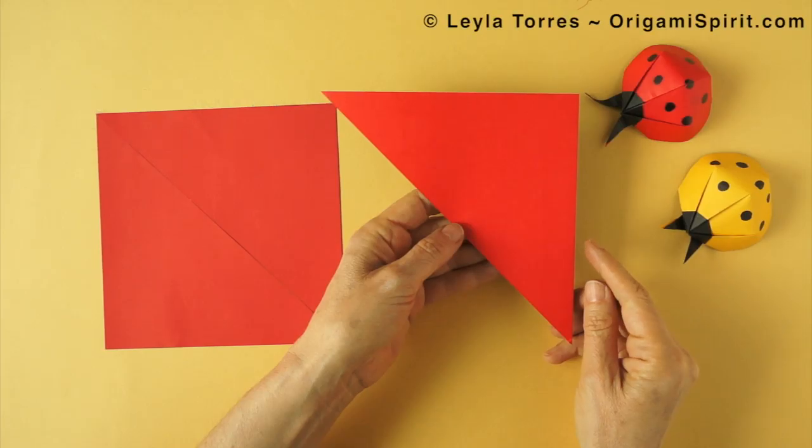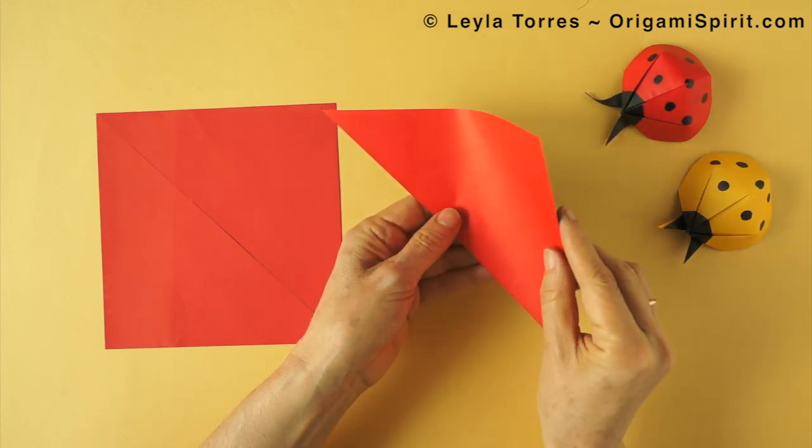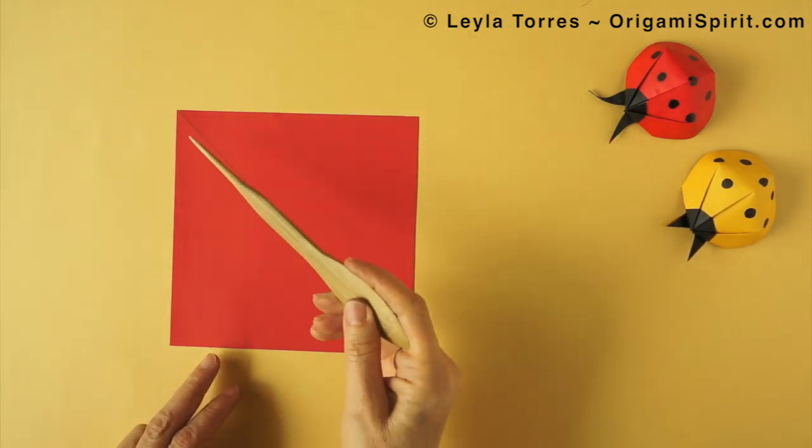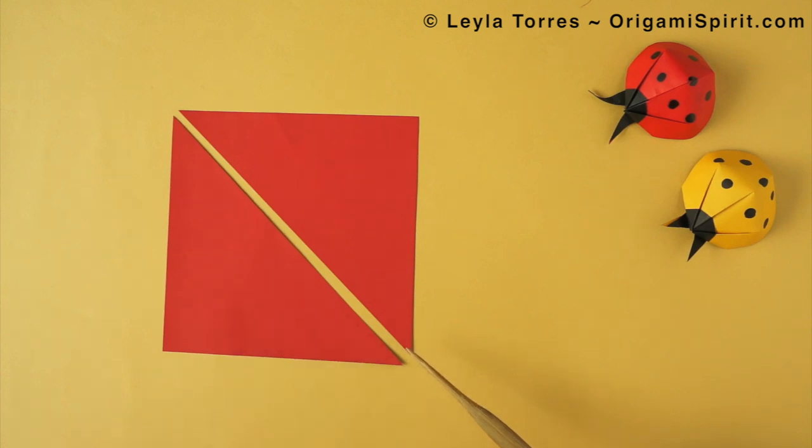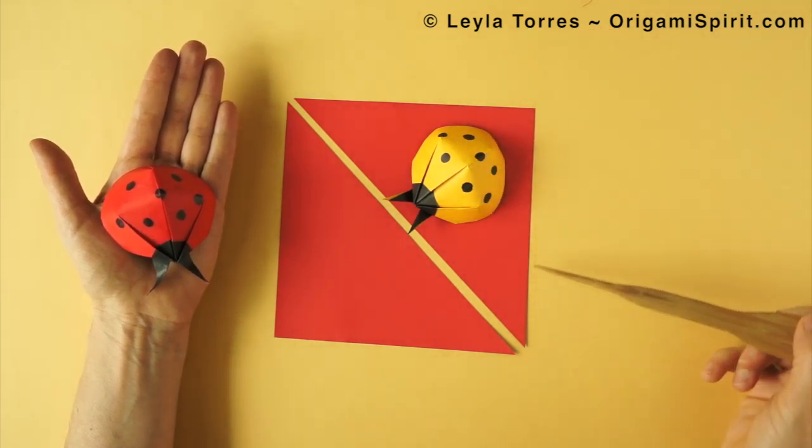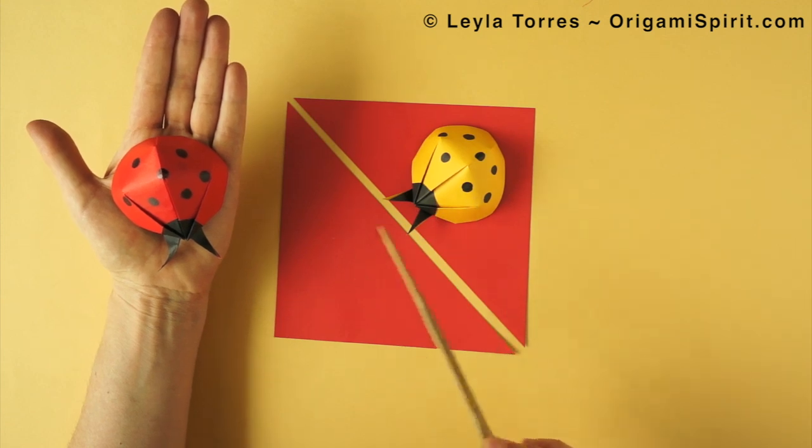To make the Ladybug, we need a triangle, different color on each side. If we have a square, we can cut it in half diagonally and we will have paper for two Ladybugs. If we begin with a square six by six inches, we end up with a Ladybug about this size.